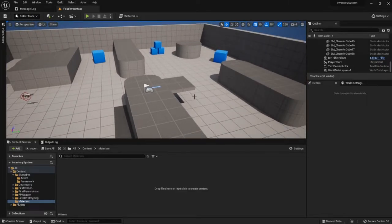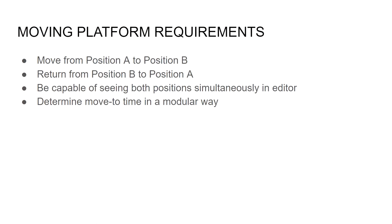We're going to do a few things before we actually get into programming our platforms. The first thing we're going to do is create a debug material. We want a moving platform that goes from a known position A to a known position B, and we want to determine what position B is in the viewport without going back into the class. We also want to determine how long it takes to move and visualize where position B is.